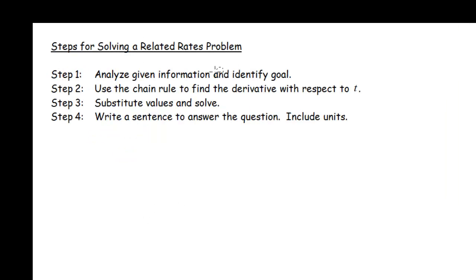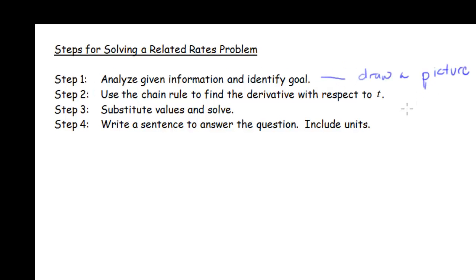So let's remind ourselves of the basic steps. Step one, you've got to read the problem, analyze the given information, and identify the goal. And with these geometry based problems, you're going to need to draw a picture. Step two, use the chain rule to find the derivative with respect to t. Step three, substitute values and solve, and then write a sentence answering the question, making sure to include units.